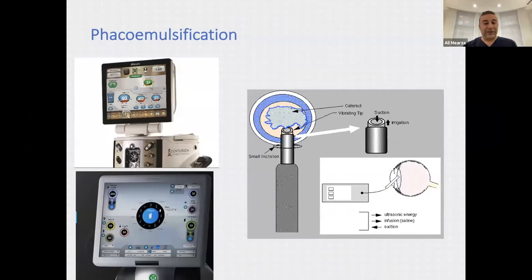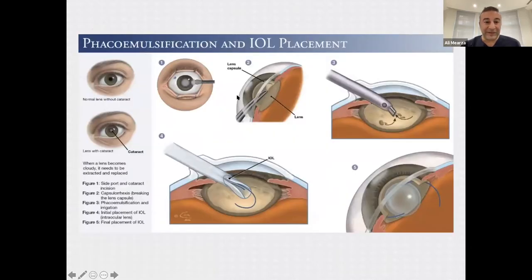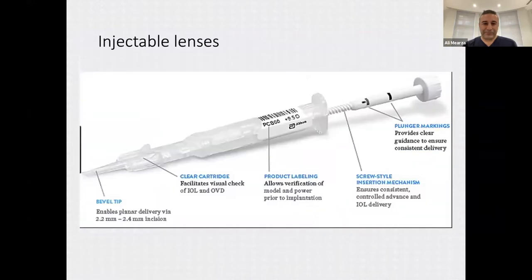To remove the cataract, we use a phacoemulsifier — a tip placed through a small incision that vibrates at 40,000 Hz, breaking up and removing the lens simultaneously. The steps are: make a corneal incision, open the lens capsule, remove the lens substance with ultrasound, replace with an artificial lens, ensure everything is watertight, and inject antibiotic at the end. Lenses come in injectable format so large wounds and stitches are very rarely needed.